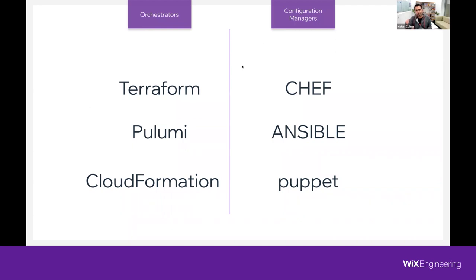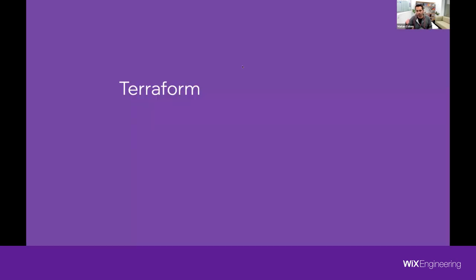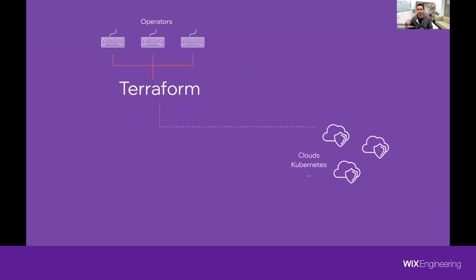In this meetup we're going to focus on Terraform. Terraform is infrastructure as code, but basically it's a wrapper for Golang — it wraps the SDKs, and you can use providers in Terraform to do your deployments to different providers. So it can be Azure, GCP, AWS, Kubernetes, Helm, and whatever provider has been built in Go for Terraform, you can use.